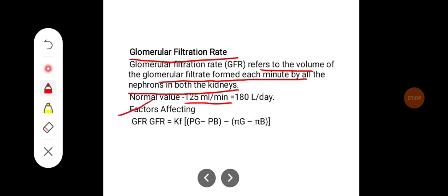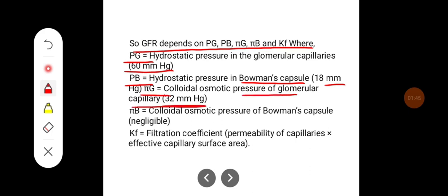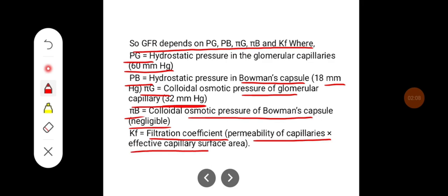GFR mainly depends on the filtration coefficient (Kf), hydrostatic pressure in the glomerulus (Pg), hydrostatic pressure in Bowman's capsule, oncotic pressure in the glomerulus (pi G), and oncotic pressure in Bowman's capsule. Pg is around 60 mmHg, hydrostatic pressure in Bowman's capsule is around 18 mmHg, and pi G (colloidal osmotic pressure in the glomerular capillary) is around 32 mmHg. Oncotic pressure in Bowman's capsule is negligible because plasma proteins are not filtered. Kf is the filtration coefficient, which is the product of capillary permeability and effective capillary surface area.